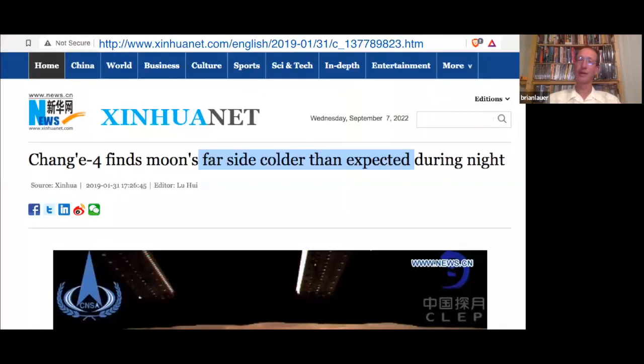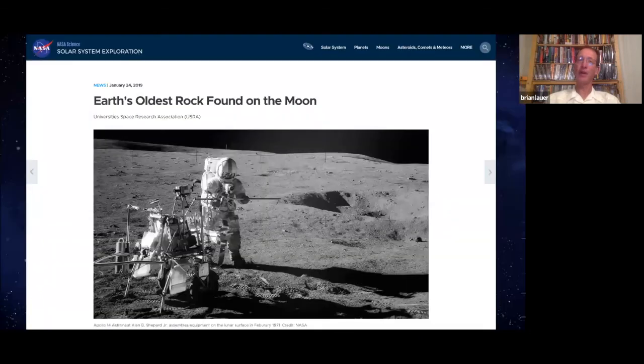And how come the far side of the Moon is colder than they expected? The nights were 30 degrees colder than they figured it should be. And how come the oldest rock found - the Earth's oldest rock - was found on the Moon? How did that get there?